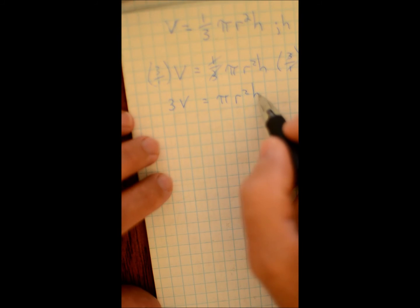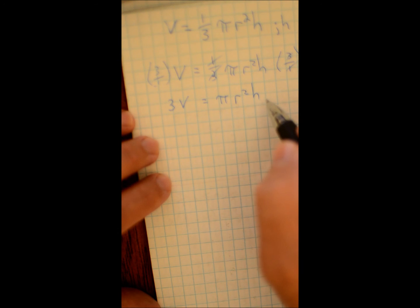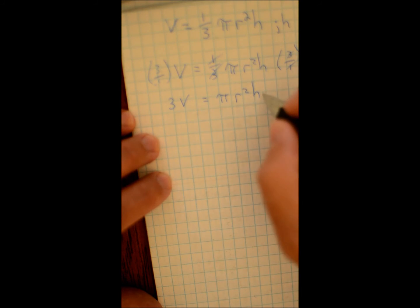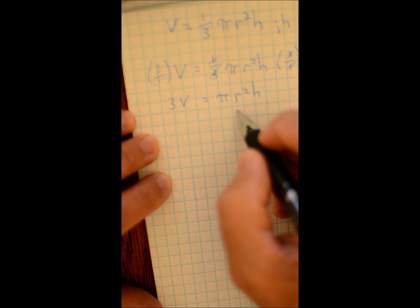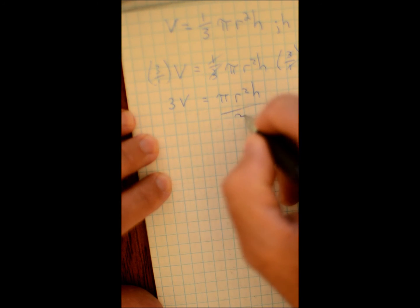Now to get just down to the h, which is what we're solving with respect to, you do kind of the same trick. But we're going to divide both sides by pi r squared.